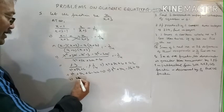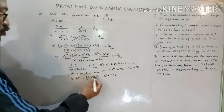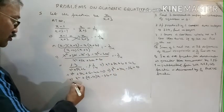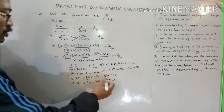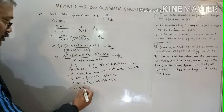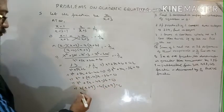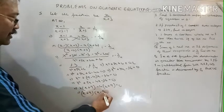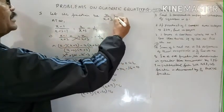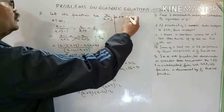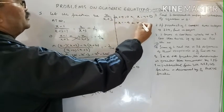Using middle-term breaking: x squared plus 9x minus 4x minus 36 equals 0 — two positive, two negative, so it is fine. Taking x common: x(x plus 9), minus 4 common: minus 4(x plus 9) equals 0. So (x plus 9)(x minus 4) equals 0. Applying zero product rule: x equals minus 9 or x equals 4.